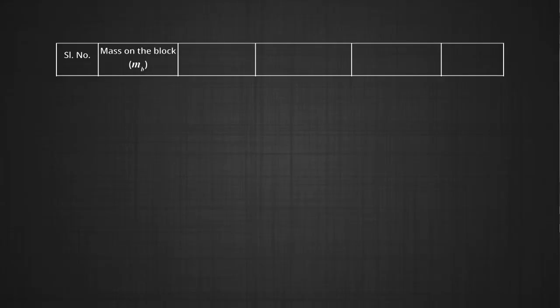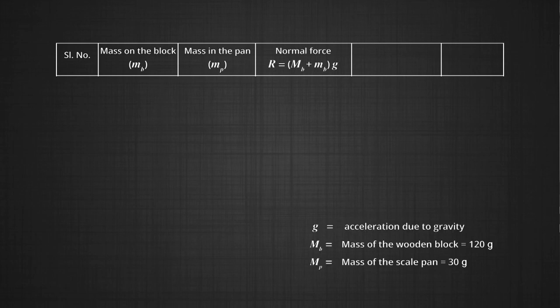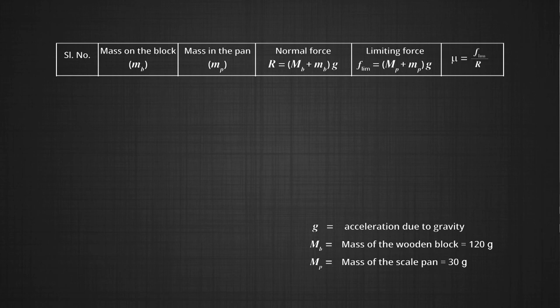To tabulate our readings, we set up an observation table with the following columns: mass on the block, mass in the pan, normal force (which is the mass of the block plus what is placed on it), limiting friction (which is the pull — i.e., the weight of the pan plus the weights inside it), and mu — the ratio of the force of friction to the normal reaction force.